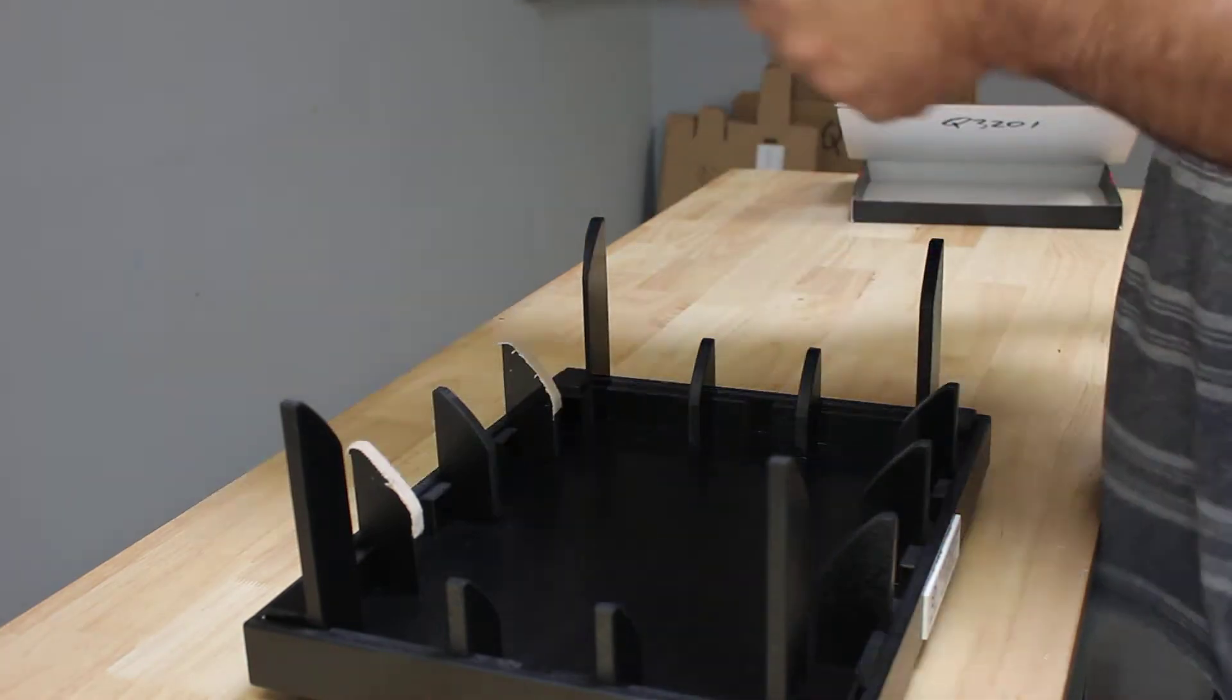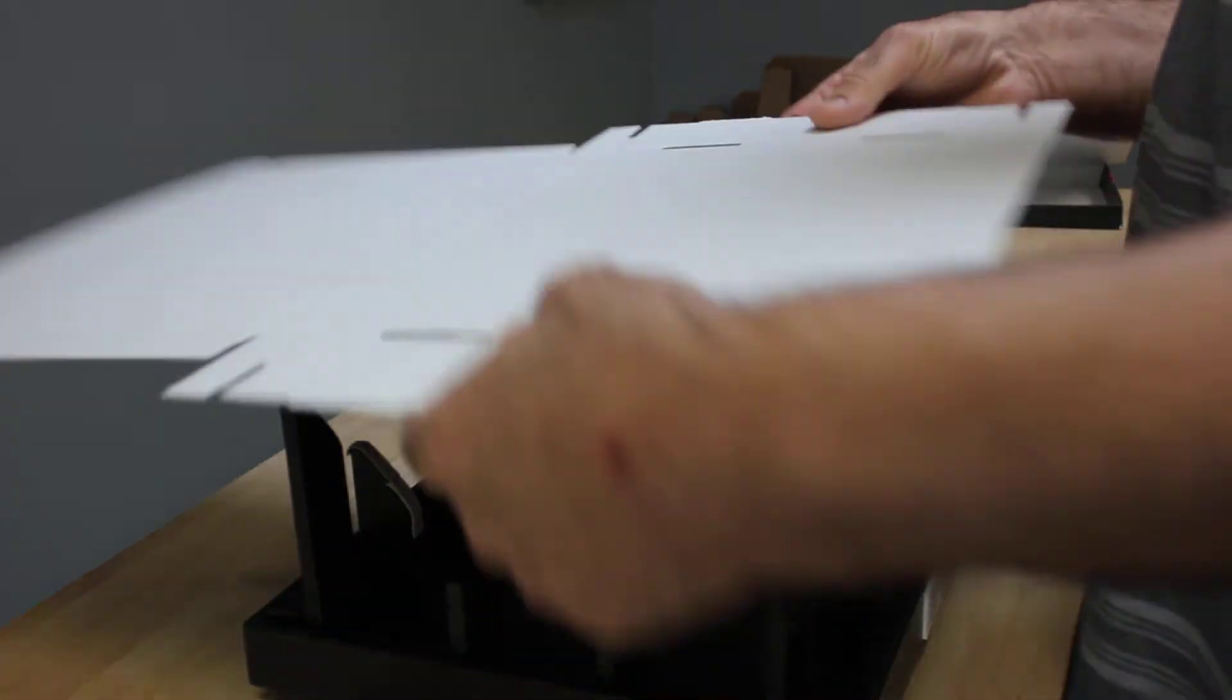It's a two-part process. We're going to go ahead and set the box into the fixture, then press it down and make our folds. So let's show you how it's done.